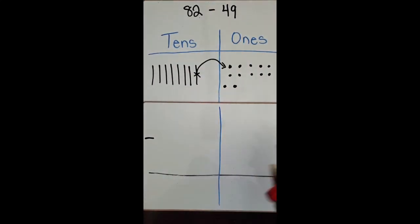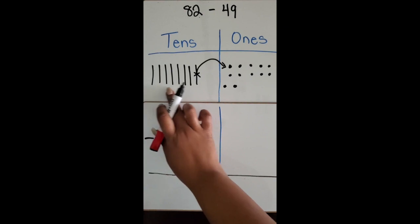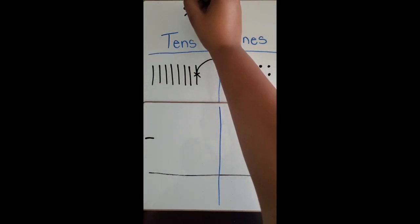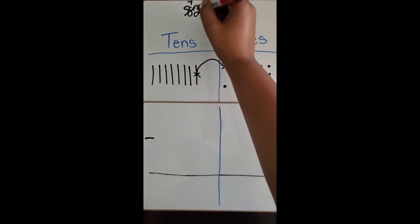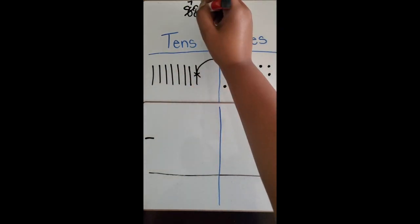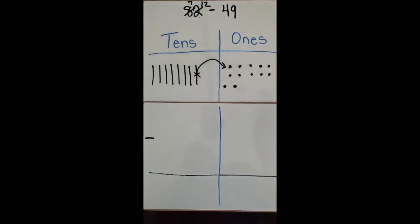Okay, now I'm going to show up here how much I still have. I still have seven tens and now I have twelve ones. This still represents 82. I didn't take anything away, I just regrouped it.